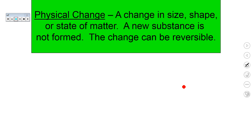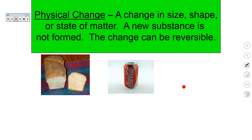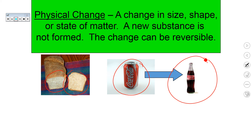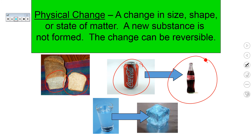A physical change is a change in the size, shape, or state of matter. A new substance is not formed and the change can be reversed. For example, if you cut a piece of bread, the composition of that bread is the same. If you pour Coke from a can into a bottle, the Coke composition is still the same — you have just changed the shape of the container. If you freeze water, the composition of the water is the same as the composition of the ice. A new substance is not formed; the change can be reversed.